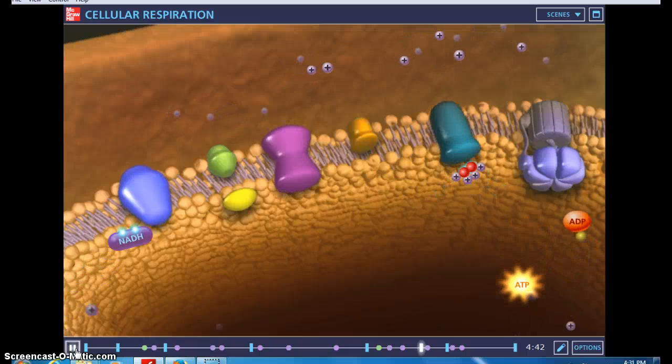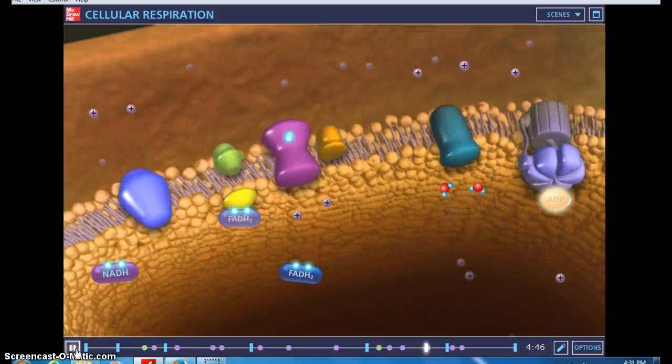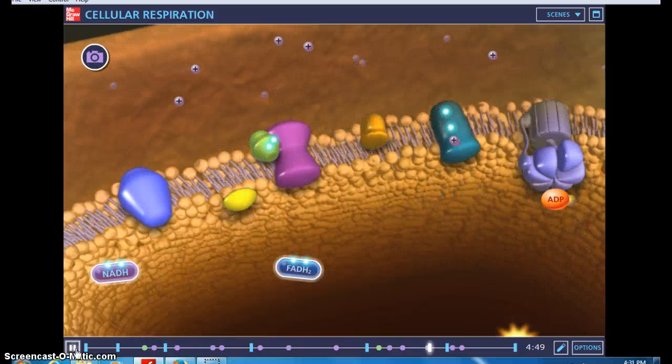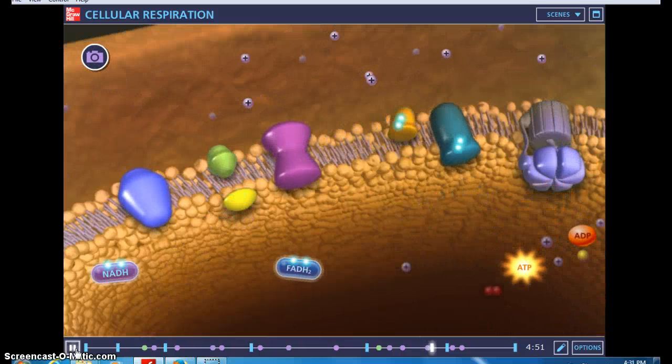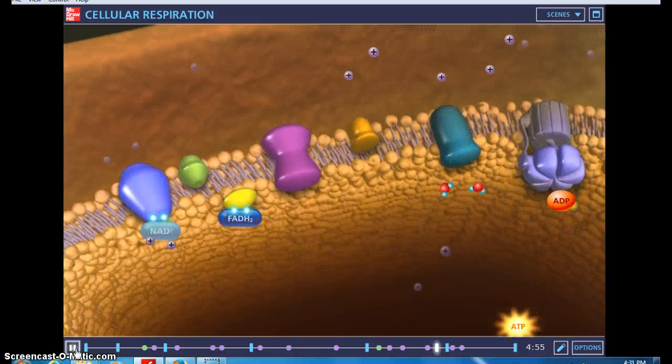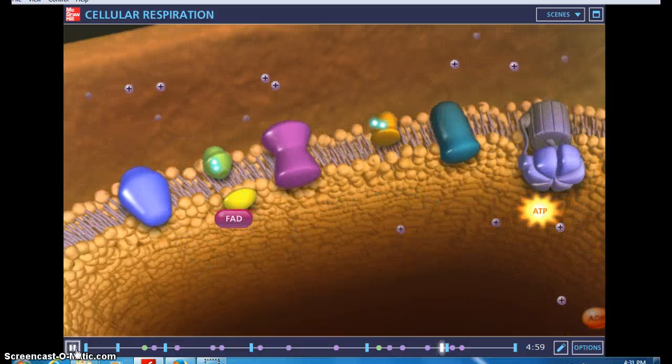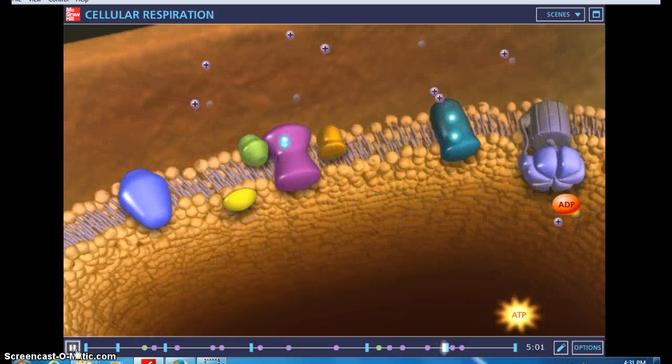All the high-energy electron carriers from the previous stages of cellular respiration bring their electrons into the chain. From this, the bulk of ATP from the entirety of cellular respiration is produced. A net of 32 to 36 ATP.